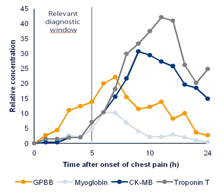A biomarker, or biological marker, is a measurable indicator of some biological state or condition. Biomarkers are often measured and evaluated to examine normal biological processes, pathogenic processes, or pharmacologic responses to a therapeutic intervention. Biomarkers are used in many scientific fields.